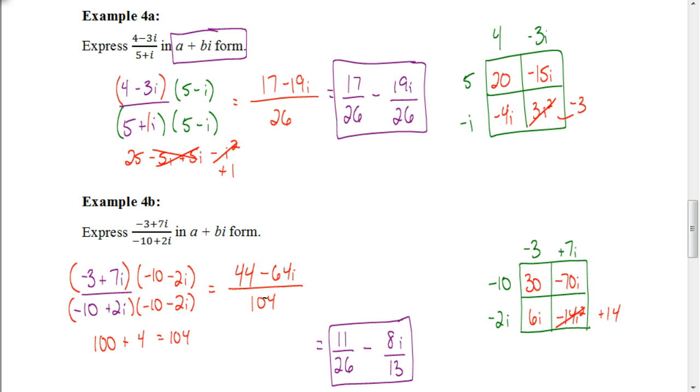Now, we don't want to leave it like that. Remember, we want to put it in the a plus bi form. So you take that fraction, break it up into two pieces. So it would be 44 over 104 minus 64i over 104. And then, like I said before when you worked on that on your own, remember I told you that we have to reduce these. And so 4 would go into both 44 and 104 to be 11 over 26. 8 goes into both 64 and 104 to give us 8i over 13. So that would be your final answer.